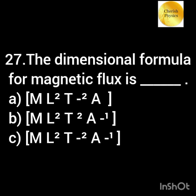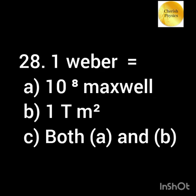The dimensional formula of magnetic flux is — One Weber is equal to —